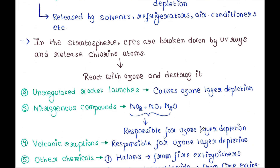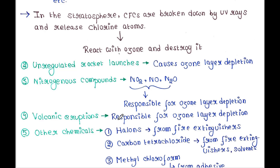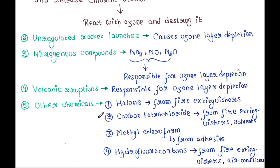Next is unregulated rocket launches, which also causes ozone layer depletion. Certain nitrogenous compounds such as NO2, NO, and N2O are responsible for ozone layer depletion. Volcanic eruptions are sometimes responsible as well. Other chemicals such as halons from fire extinguishers, carbon tetrachloride from fire extinguishers and solvents, methyl chloroform from adhesives, and hydrofluorocarbons from fire extinguishers and air conditioners are some further causes of ozone layer depletion.